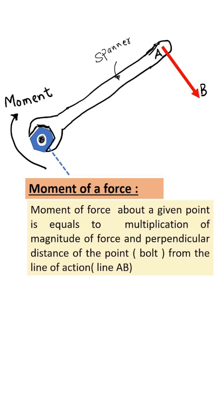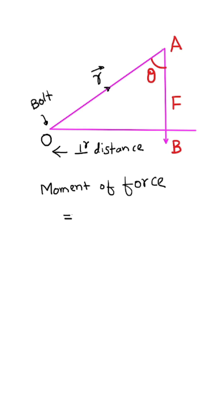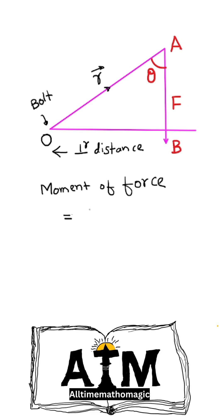Moment of force about a given point equals the multiplication of magnitude of force and perpendicular distance of the point from the line of action. Replacing force by line AB and bolt by point O, then moment of force is given by magnitude of force multiplied by perpendicular distance OB.